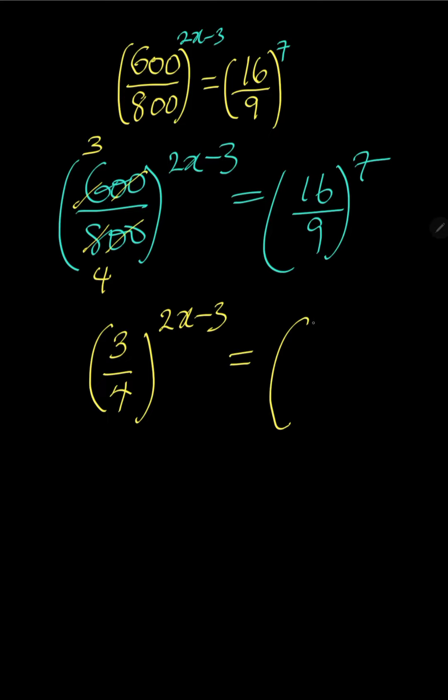Everything is equal to 16, which is 4 to the power of 2, while 9 is the same thing as 3 to the power of 2, then to the power of 7.